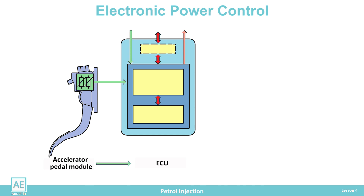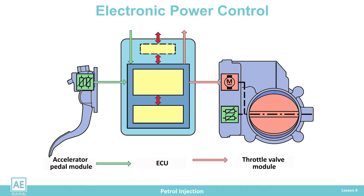Based on the signal from the sensor and other data, the ECU performs a calculation and sends an electrical impulse to the throttle module. The electric motor in the throttle module, based on the received pulse from the ECU, sets the throttle in a definite position. The throttle position sensor in the module measures the current throttle position and sends an electrical signal to the ECU as control feedback. Based on this signal, the ECU monitors the module operation and can make additional corrections to the position of the throttle valve.